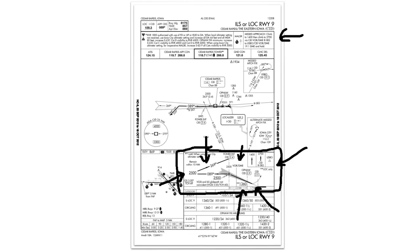In addition, on the profile view you'll find the distance you must remain within while flying your procedure turn or hold in lieu of procedure turn, and the glide slope angle of the approach. In this case, it's three degrees.